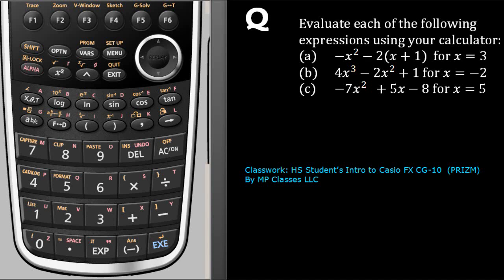Sometimes we want to find the value of an expression such as a, b, or c at a particular value of x. Typically in a graph, this would be a function and you want to find the y value for x equal to 3. This can be done graphically and also by the table method.